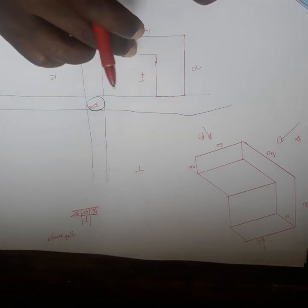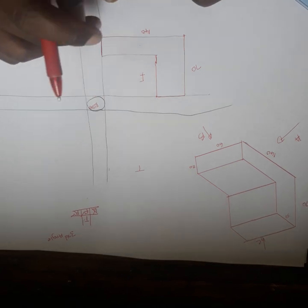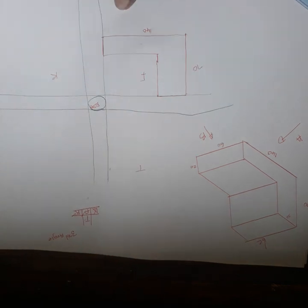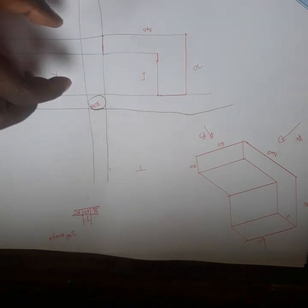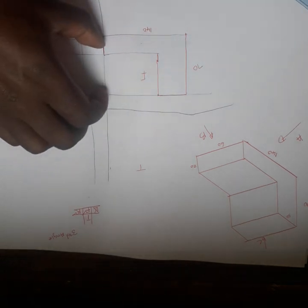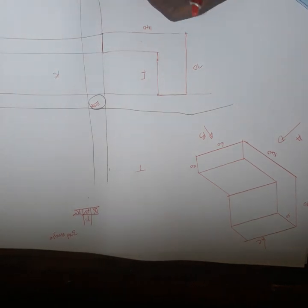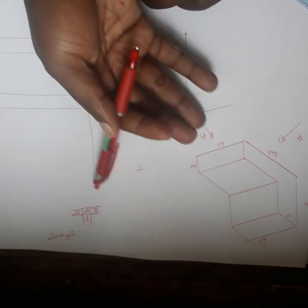So my front view is going to look like this. After, I want to draw my right view. I'm going to project lines first. I project a line here and project a line here. If you check, this measurement is already 70 before I even start measuring.